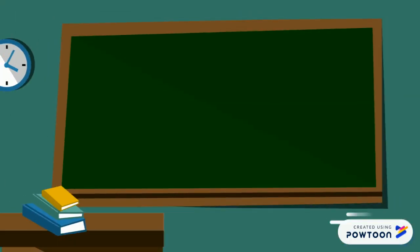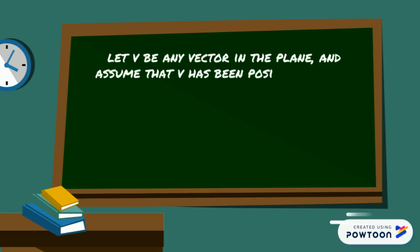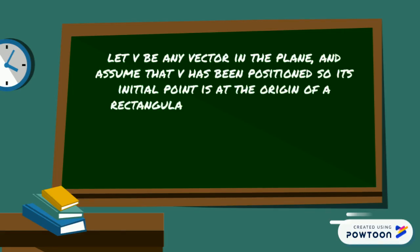As you can see from the graph before, let V be any vector in the plane and assume that V has been positioned so its initial point is at the origin of a rectangular coordinate system.